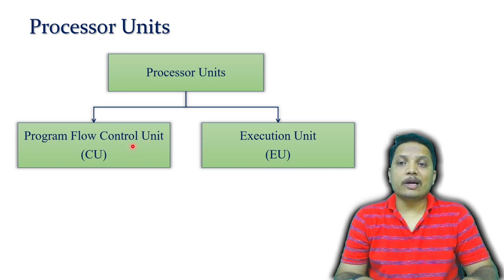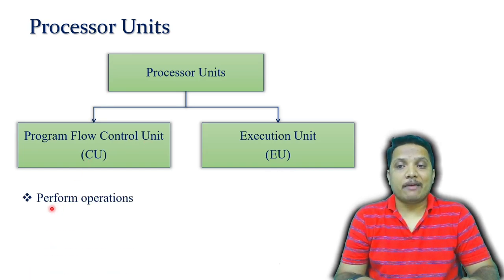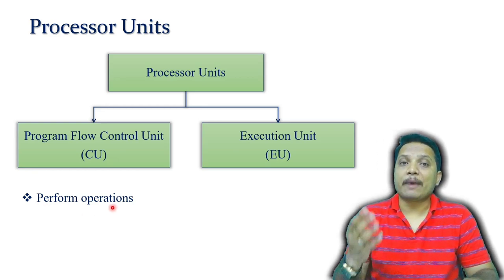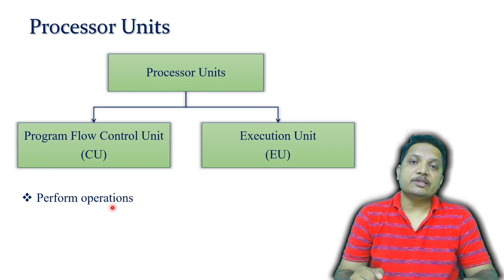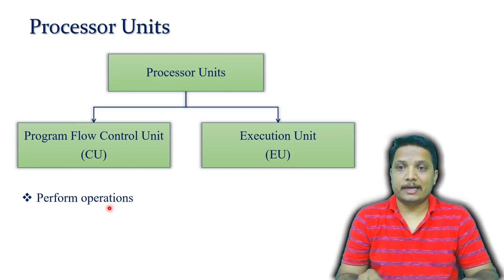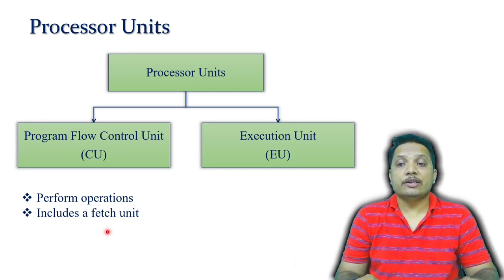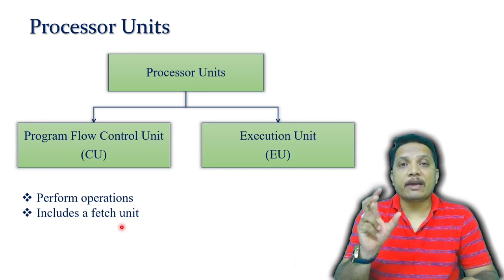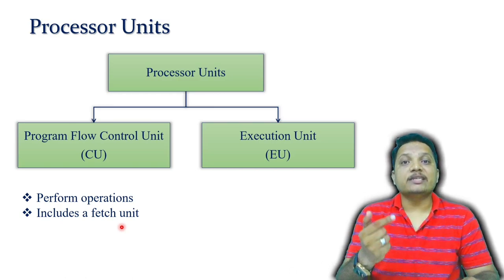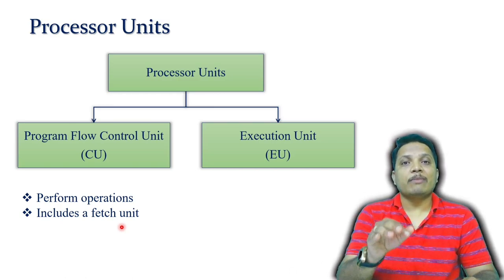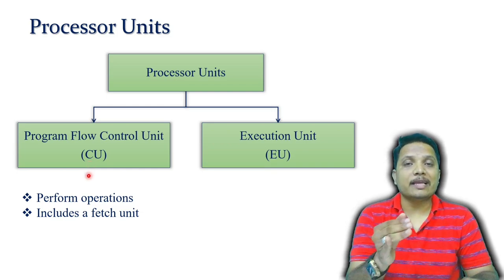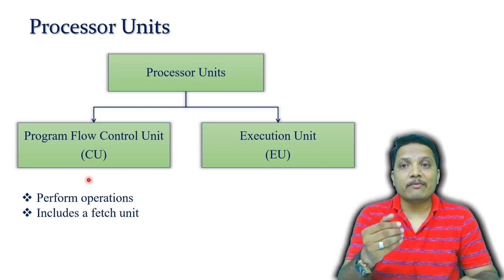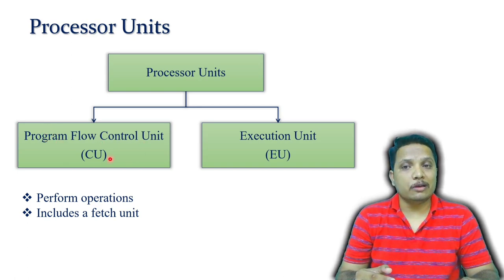The Program Flow Control Unit has different operations to be performed with the processor. There can be pipelining operation where different segments of instructions are executed in sequence. It includes a fetch unit — every instruction has an opcode fetch that defines which instruction gets executed by the processor. Pipelining operation is also well defined by the Program Flow Control Unit.